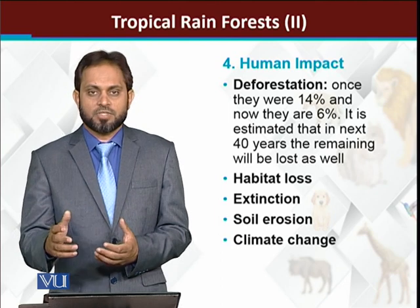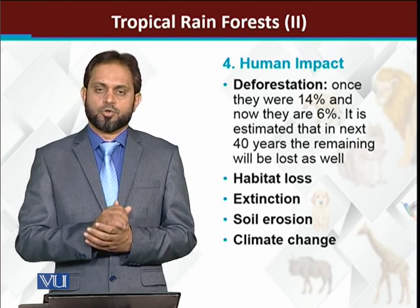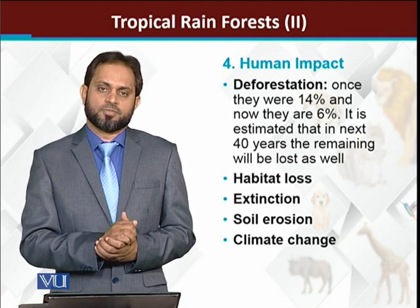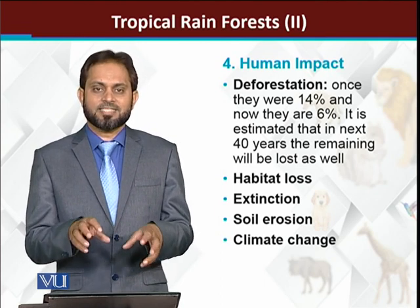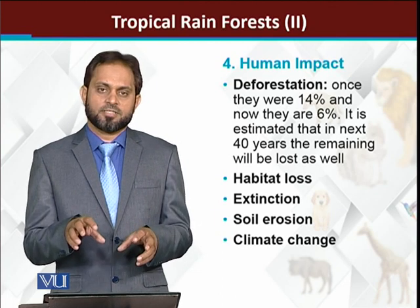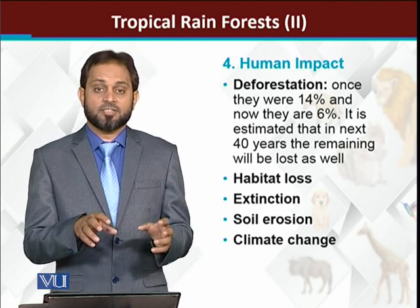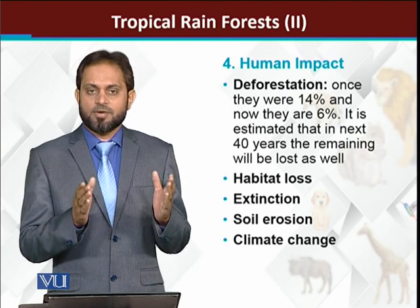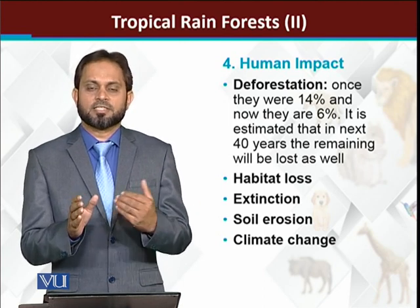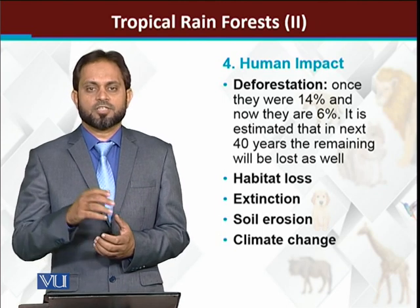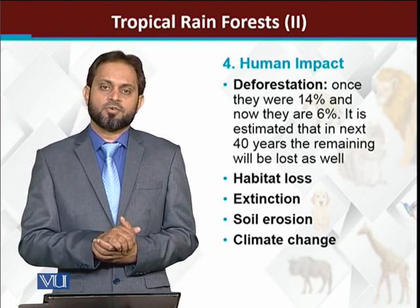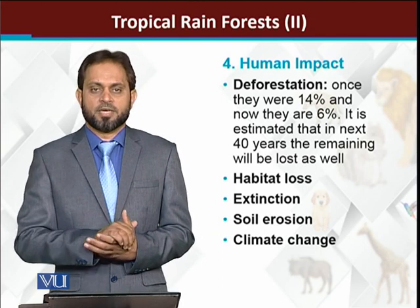Soil erosion is another major impact. The next impact is climatic change. Tropical rainforests have a huge number of plant species which maintain rainfall patterns. If trees are removed, the area is ultimately subjected to drought. Changes in rainfall patterns will severely impact human life.